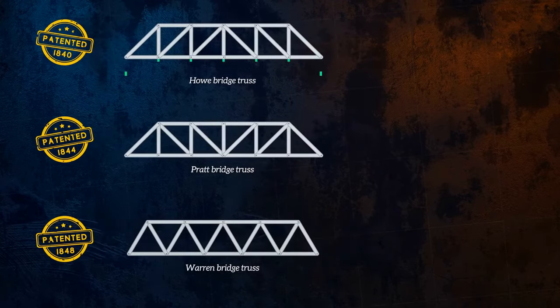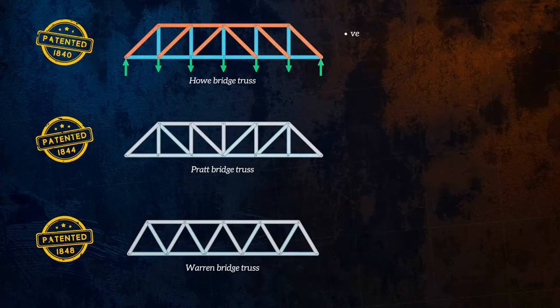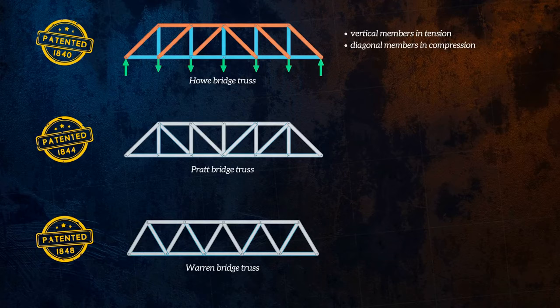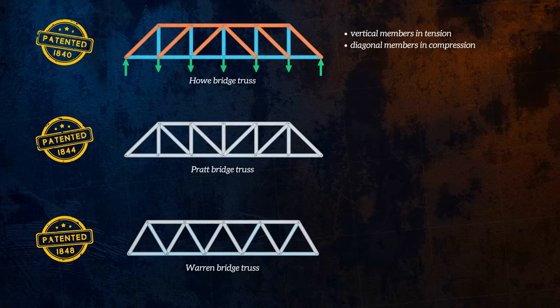Let's start with the Howe truss. We can see that its vertical members are in tension, and its diagonal members are in compression. Members in compression usually need to be thicker than members in tension, to reduce the risk of buckling. This means that the Howe truss isn't very cost effective, since the diagonal members, which need to be thicker, are quite long.